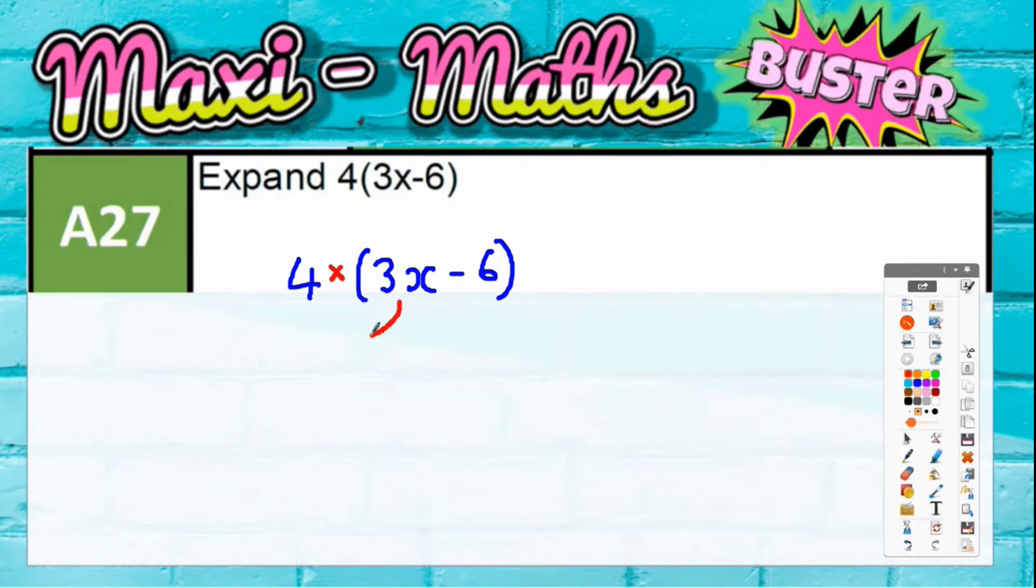We need to calculate 3x times 4. So 3x happening four times would be 12x - three lots of four is 12, so 3x times 4 is 12x.